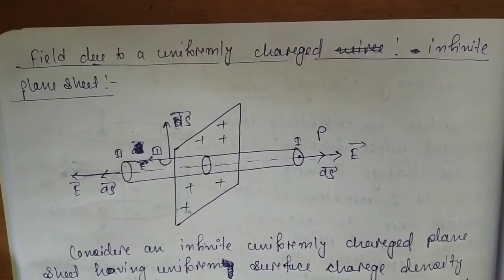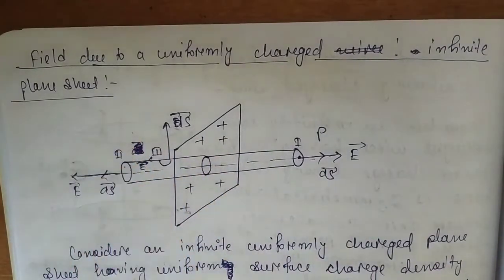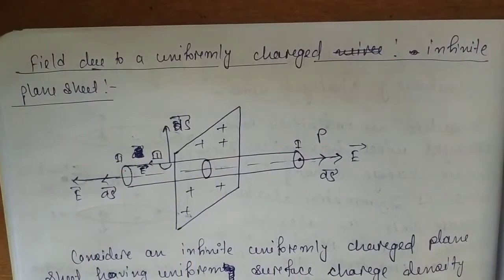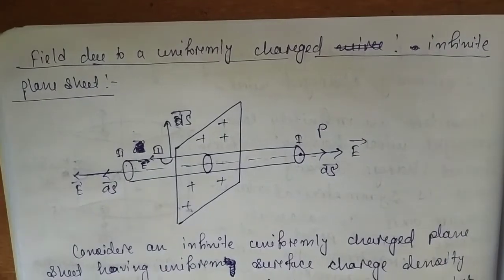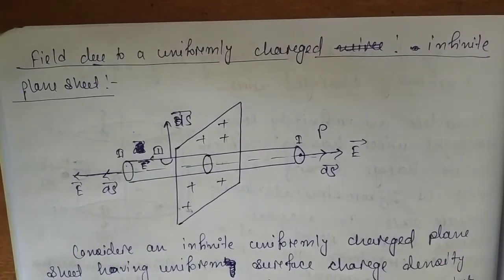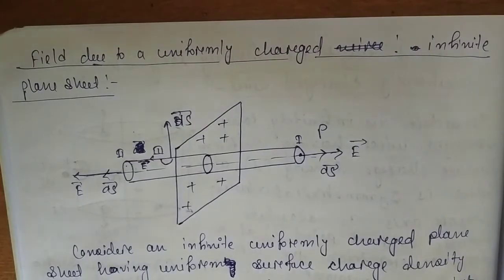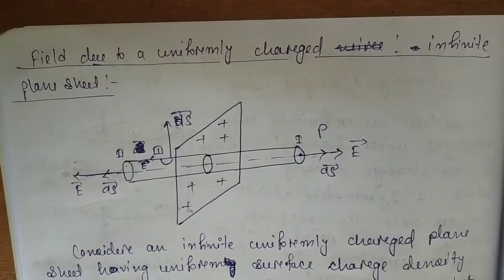Now, for the second case, I consider a uniformly charged infinite plane sheet. A plane sheet means that the 2D surface is infinite — it has infinite length and breadth. This should be called a uniformly charged plane sheet.